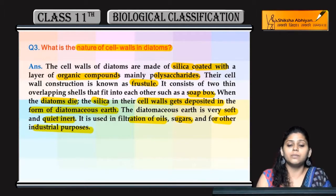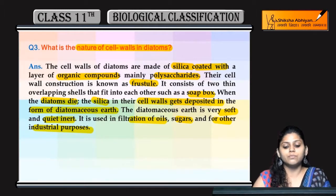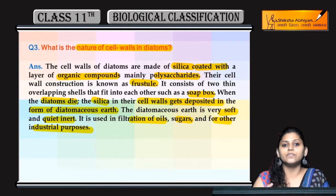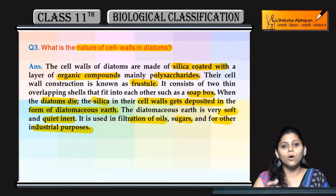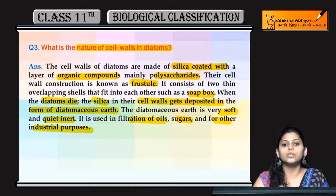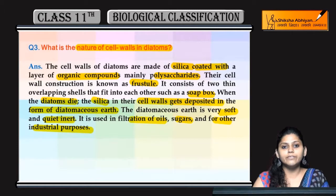So it is used in the filtration of oil, sugars, and many other agriculture and industrial purposes. Summary: diatoms ki cell wall mainly composed hoti hai silika se, iski construction ko bolte hain frustule jo soap box like hoti hai, aur jab diatoms die karte hain toh diatomaceous earth banta hai jo bahut inert aur soft hoti hai — use hota hai industrial purposes mein, oil ki filtration mein aur sugar ki filtration mein.